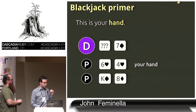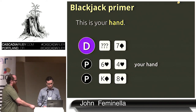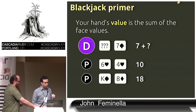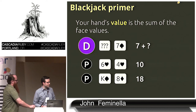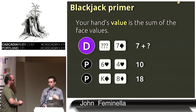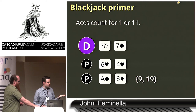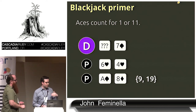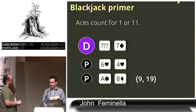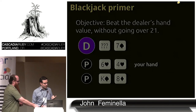Your hand's value is the sum of all the face values. So if you have a six and a four, you have a 10. Aces count for either one or 11 — so in this case, the second player has either eight plus one or eight plus 11.